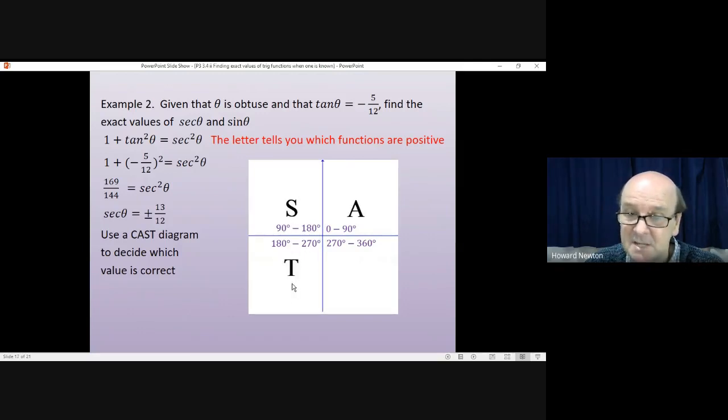Between 180 and 270, tangent is positive. Now, if tangent is positive, so is cotangent, because cot is just 1 divided by tangent. Everything else is negative. Sine is negative. Cosine is negative. Sec is negative. Cosec is negative.